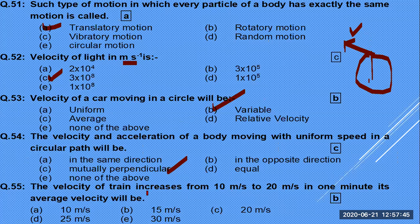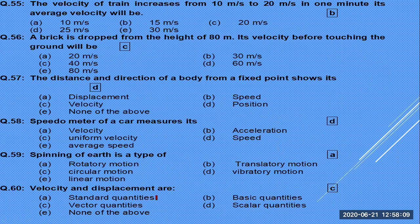Acceleration in circular motion is always directed toward the center of the circle. If the velocity of a train increases from 10 m/s to 20 m/s, the average velocity is (20 + 10) / 2 = 15 m/s. That is the correct answer.